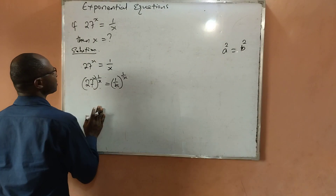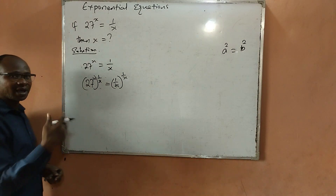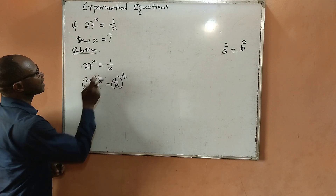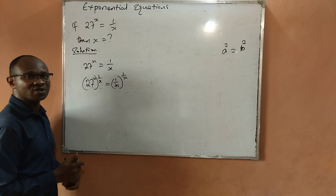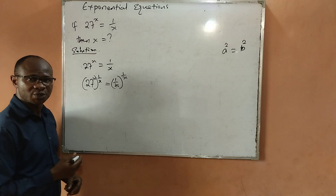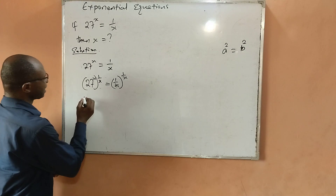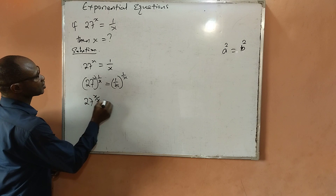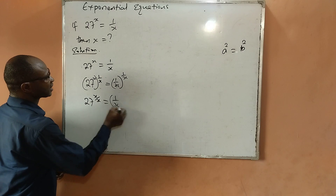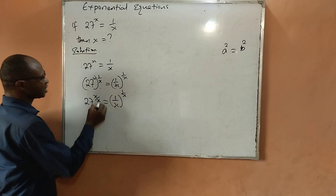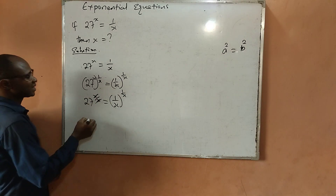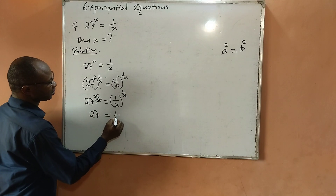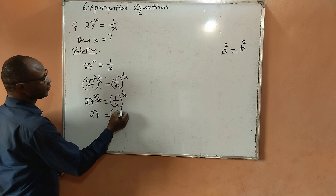By the law of indices, x inside the bracket multiplies 1 over x outside the bracket. That becomes 27 raised to power x over x, equal to 1 over x, all to the power of 1 over x. Now x cancels with x, giving us 27 equal to 1 over x, all to the power of 1 over x.